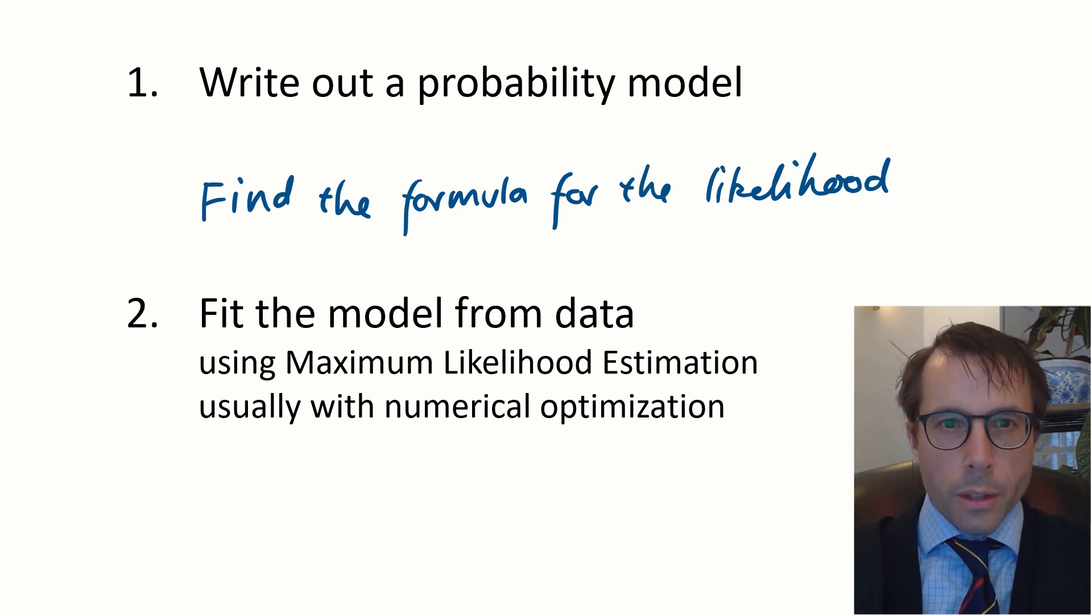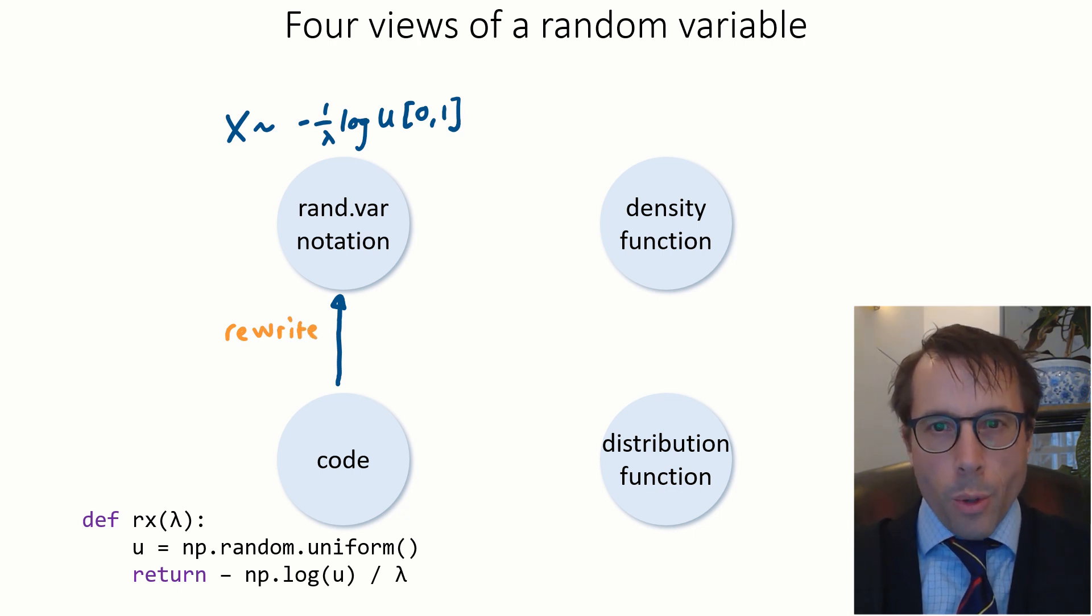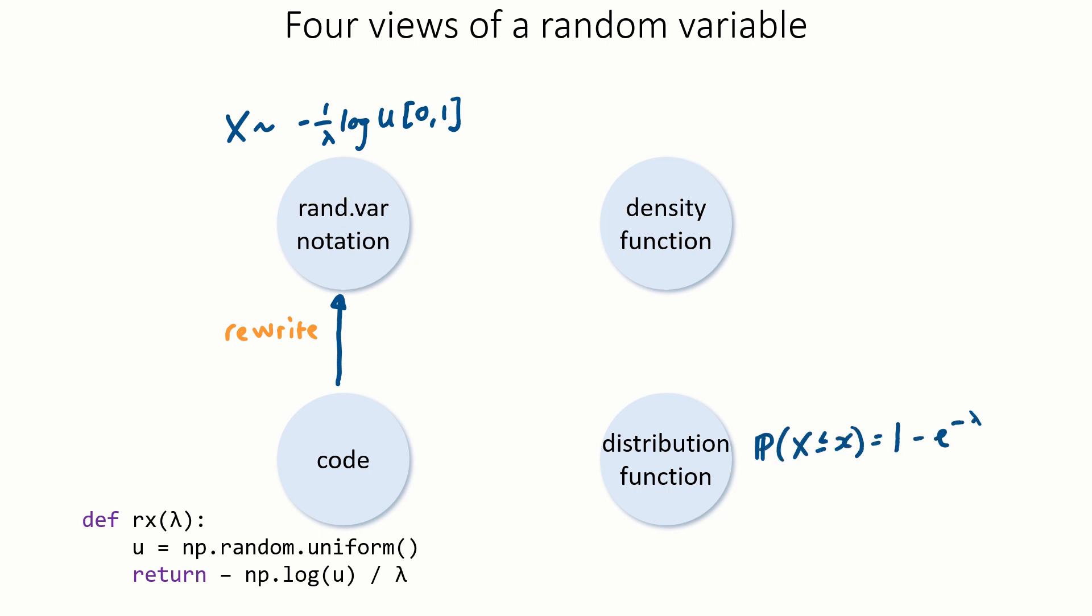Typically, the process goes something like this. We might start with code, like this code I've got on the bottom left. Then write it in random variable notation, because it's generally easier to do algebra with that than with code. Next, do some maths to find the cumulative distribution function. Finally, differentiate and we get the density function. This code here is for a continuous random variable. If it was a discrete random variable, then we'd want the probability mass function, not the density function. Often the maths would lead us directly to that, so we wouldn't need to go via the distribution. But this is the general picture.